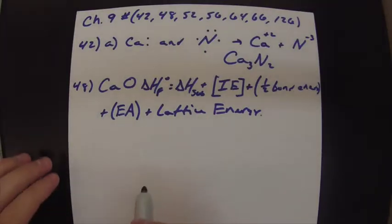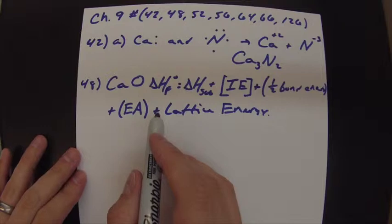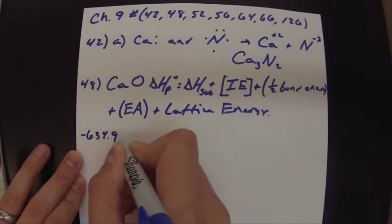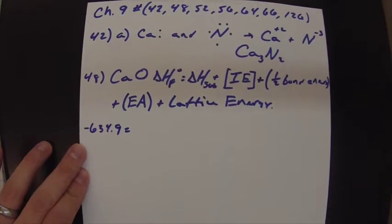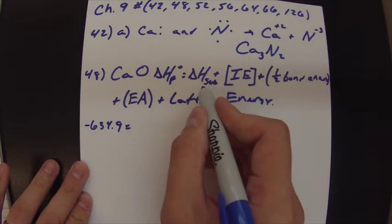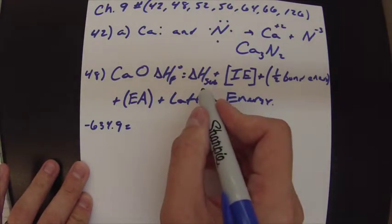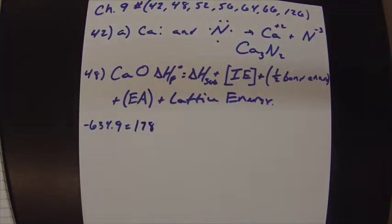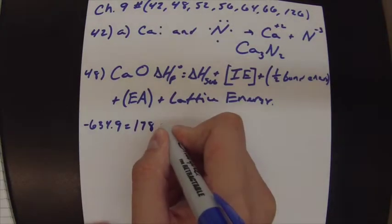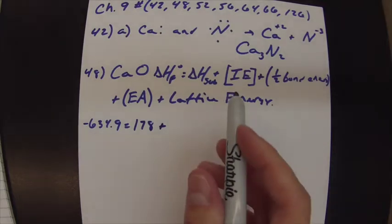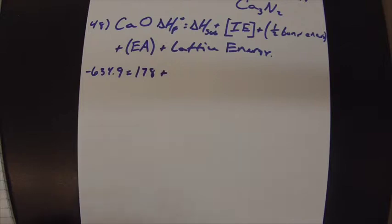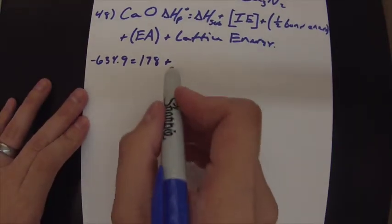Alright, so now I'll just sub in what we know. So our delta F, it gives you is negative 634.9, and that equals your delta H sublimation, which is 178. These are all kilojoules or kilojoules per mole. I'm just running out of space here, obviously, and I'd like to not run out of space. Plus, now we're going to have two ionization energies here.